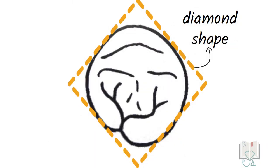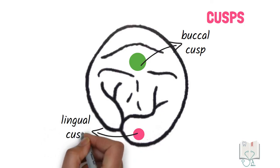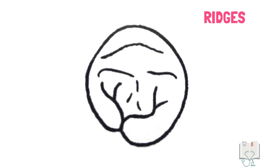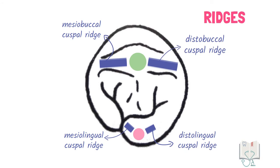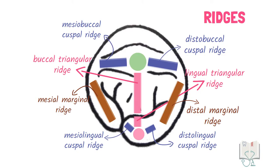From the occlusal aspect, the outline form of the crown is diamond-shaped due to the sharp lingual convergence. Both cusps are visible: a large buccal cusp almost at the center and a small lingual cusp near the lingual outline. Both cusps have two cuspal ridges — one mesial and one distal. There are two triangular ridges: the longer buccal triangular ridge and the smaller lingual triangular ridge, each running from the respective cusp towards the center. Two marginal ridges are also seen: the mesial marginal ridge and distal marginal ridge.